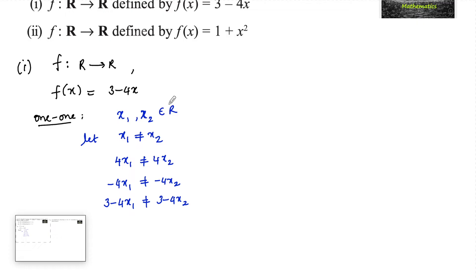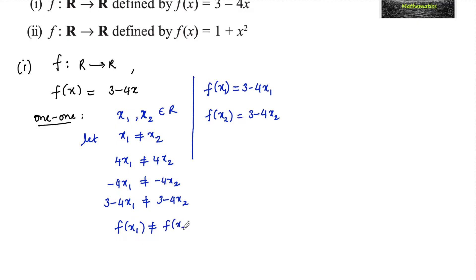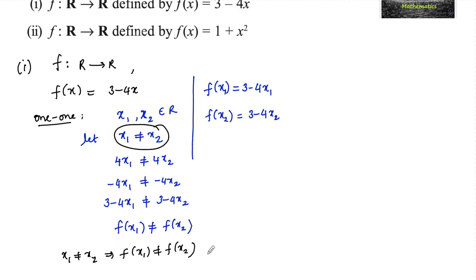Since f(x) = 3 minus 4x, we have f(x₁) = 3 minus 4x₁ and f(x₂) = 3 minus 4x₂. So f(x₁) ≠ f(x₂). For two distinct elements x₁ ≠ x₂, we get f(x₁) ≠ f(x₂). Therefore f is one-to-one.